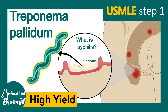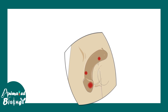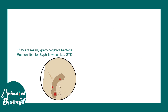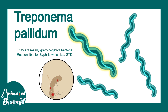In this video we'll talk about Treponema pallidum. This is a high yield video for USMLE Step 1. Treponema pallidum is the key causative bacteria for the sexually transmitted disease syphilis.